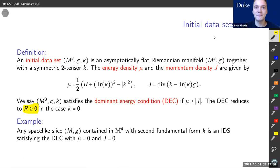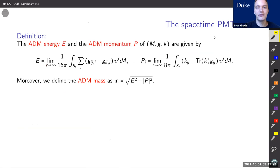One example is when you have a spacelike slice in Minkowski space with second fundamental form k — this would be an initial data set with μ = 0 and J = 0. Basically, k always corresponds to the second fundamental form of the initial data set being embedded in a four-dimensional Lorentzian spacetime.